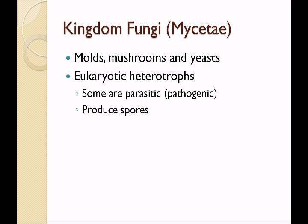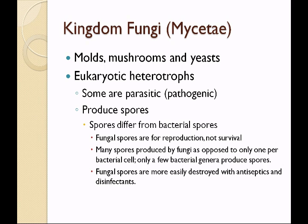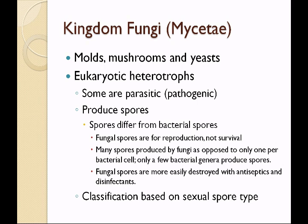Fungi produce spores. These spores differ greatly from bacterial spores. Fungal spores are for reproduction, whereas bacterial spores are for survival. Fungi produce many, many spores as opposed to only one per bacterial cell, and only a few bacterial genera produce spores. Fungal spores are more easily destroyed with antiseptics and disinfectants as opposed to bacterial spores.